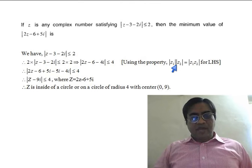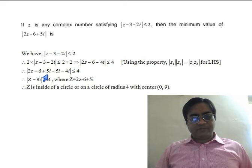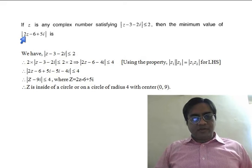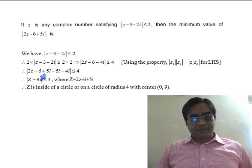Then we add 5i and we subtract 5i, and we are able to get this 2Z minus 6 plus 5i, which we write as Z.